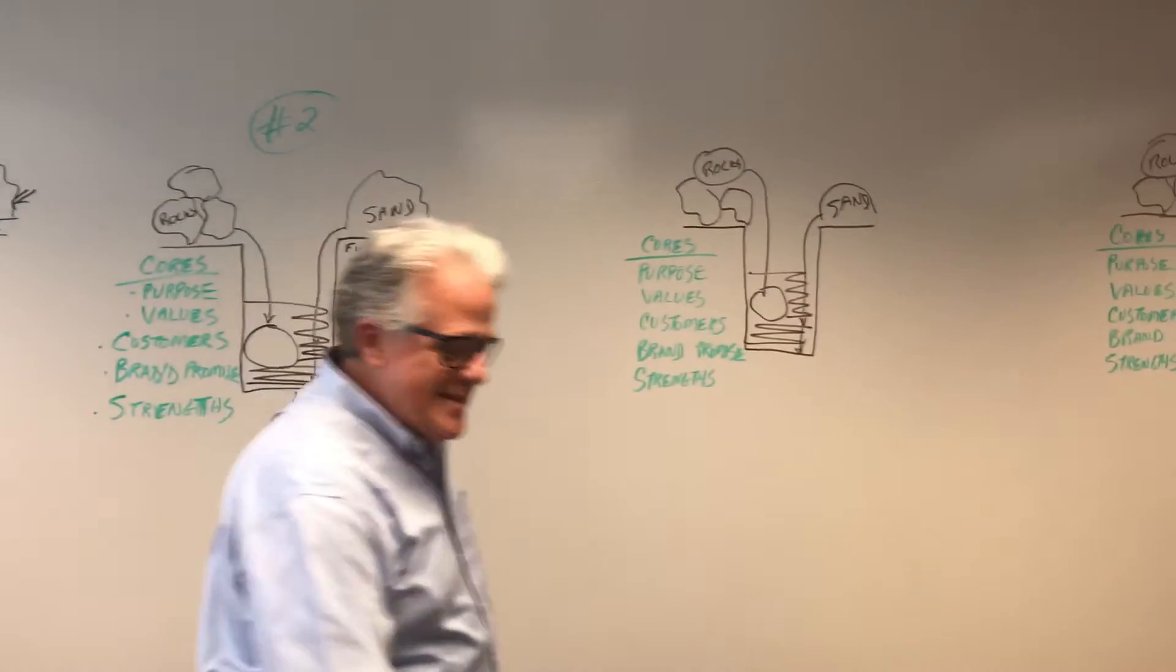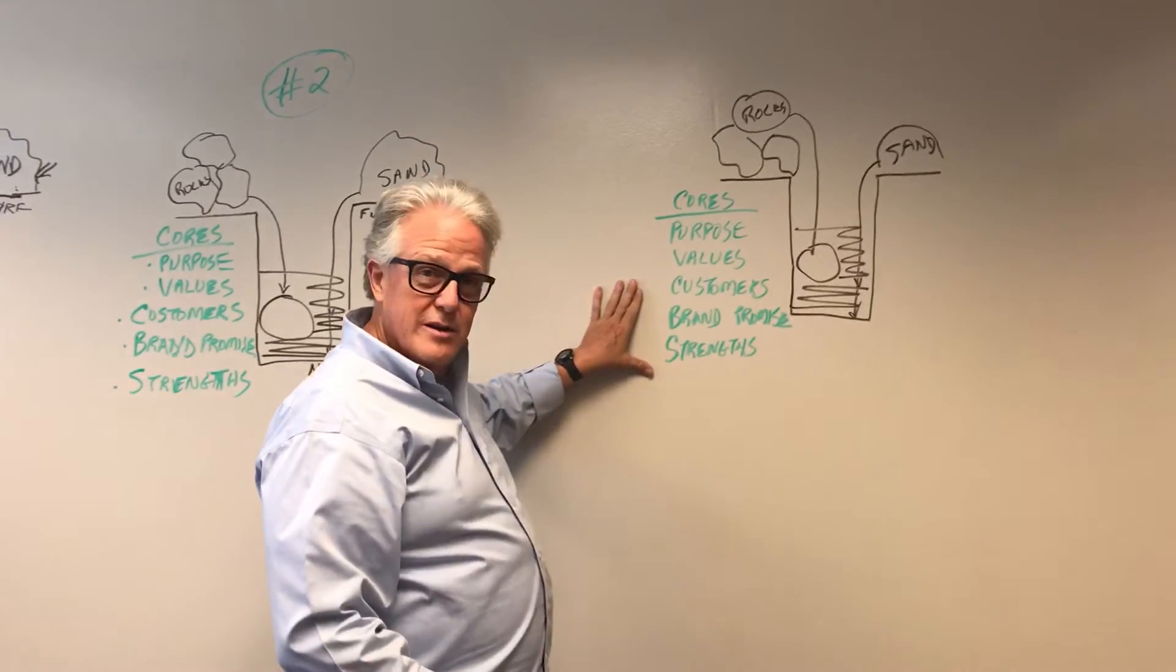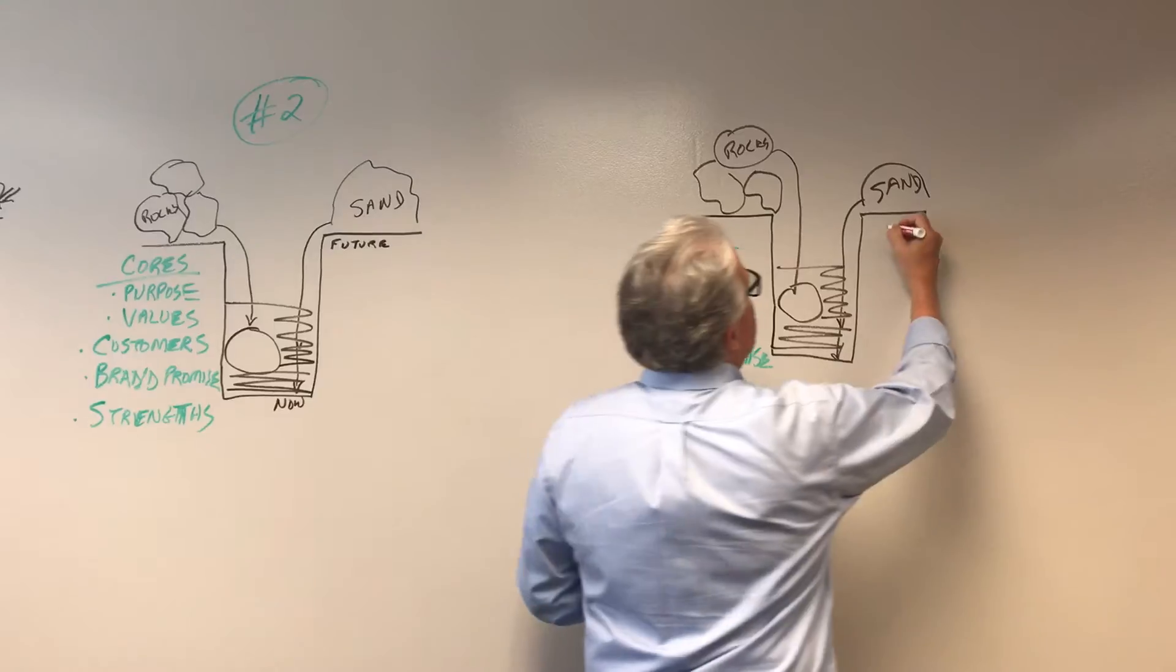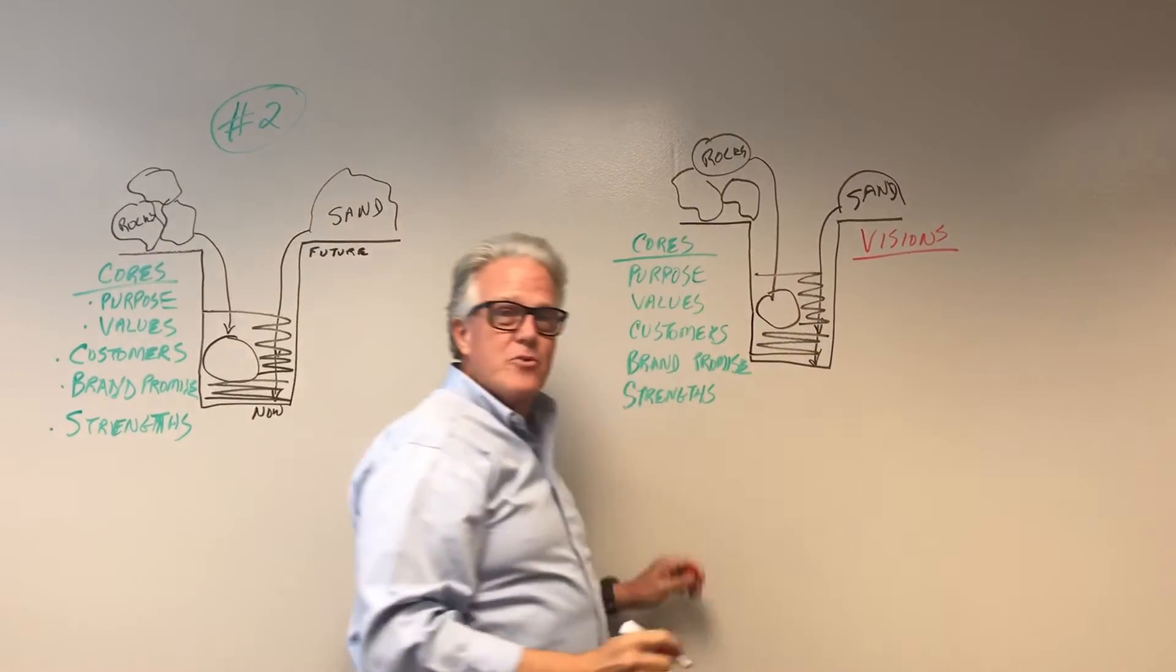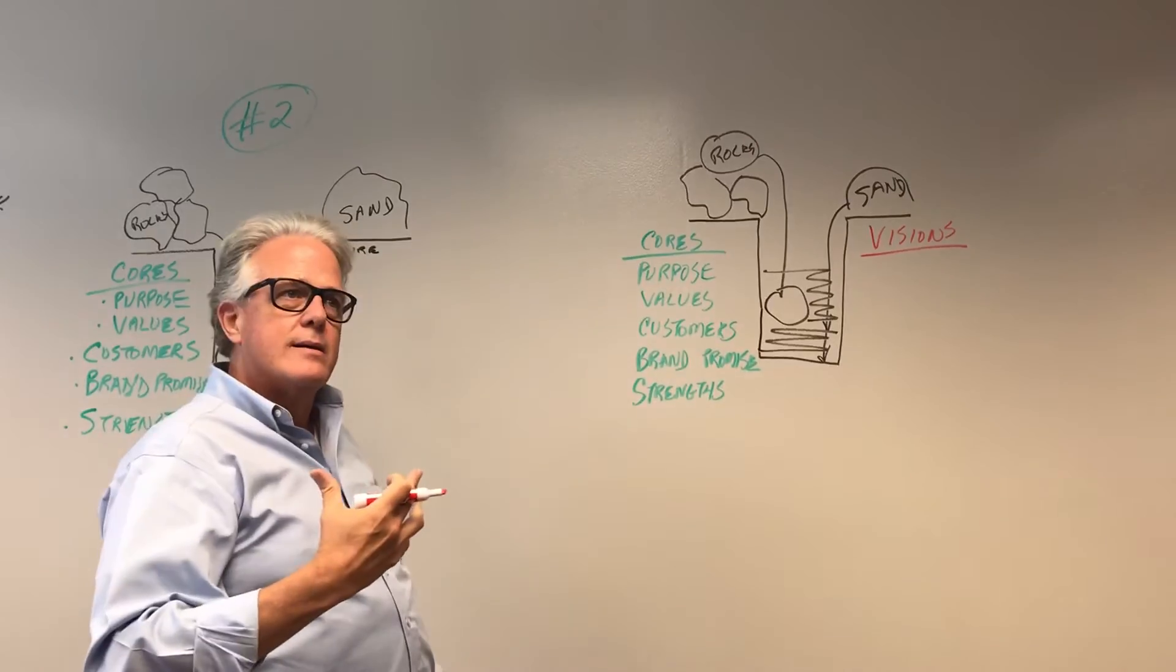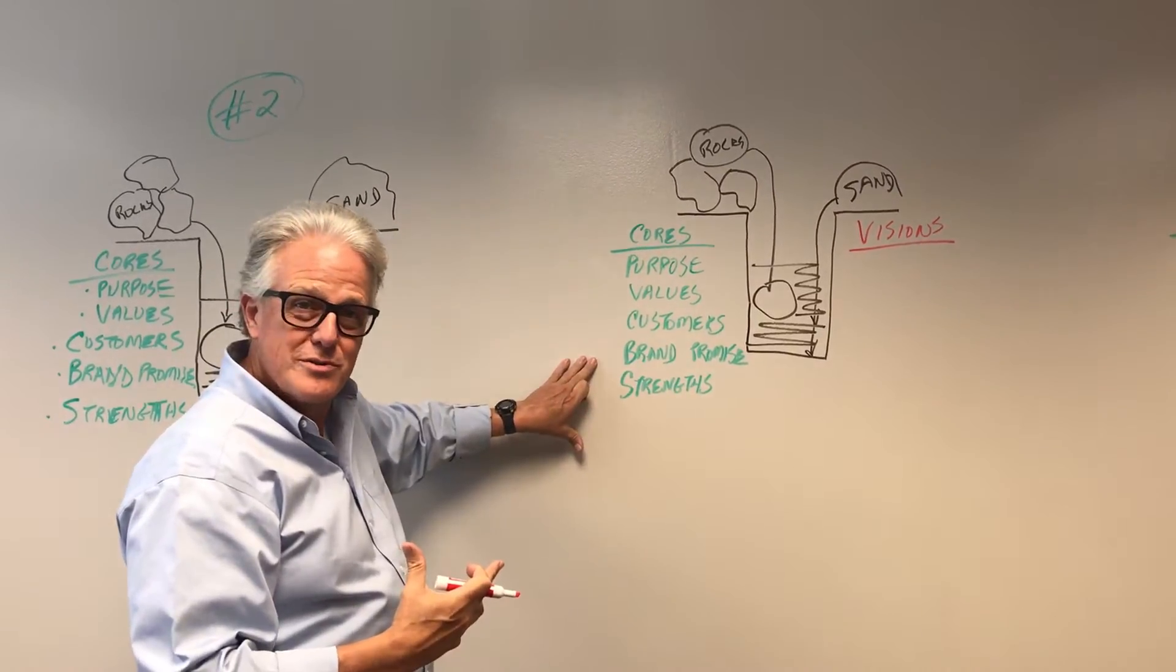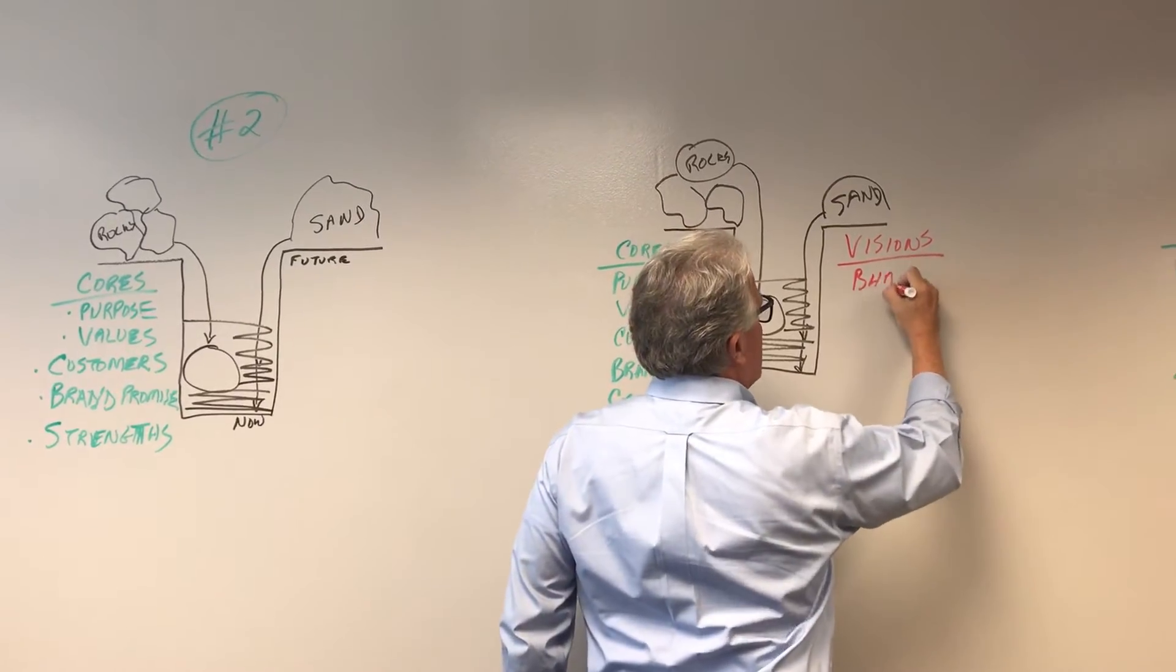Step three is after you figured out your cores that are listed right here. You've got to figure out what the vision is based on those cores. Where are you going to be down the road if you do this successfully? It's kind of like playing let's pretend. Let's pretend we've done this very successfully in the cores. Where are we going to be? Where are you going to be 10 years out?